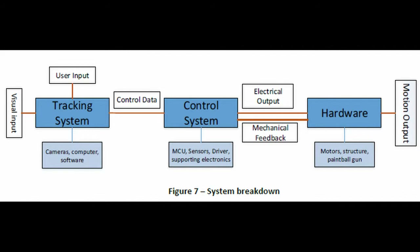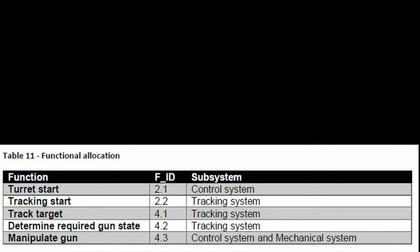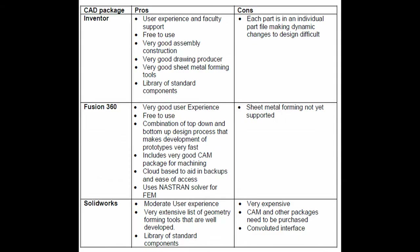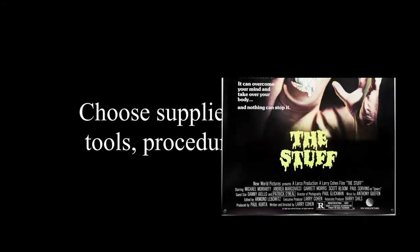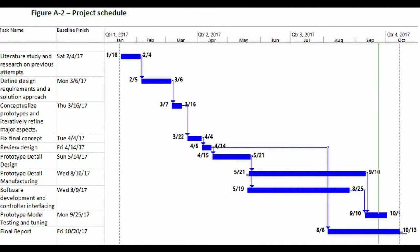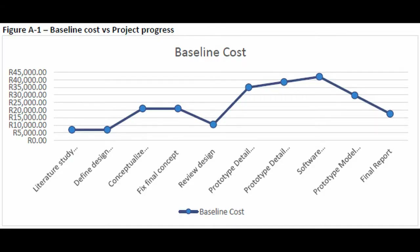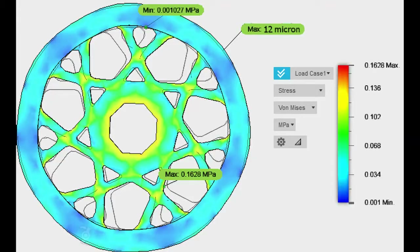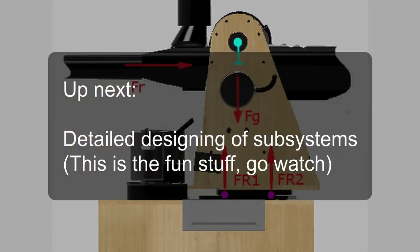The system breakdown: the system can be broken into three parts — the tracking system, the control system, and the hardware. Each will be given specific tasks based on the functional allocation from the functional breakdown. Then you choose software, tools, and team members, do a Gantt chart, give the customer a baseline cost, and then you can get to the fun stuff: detailed design of the subsystems.